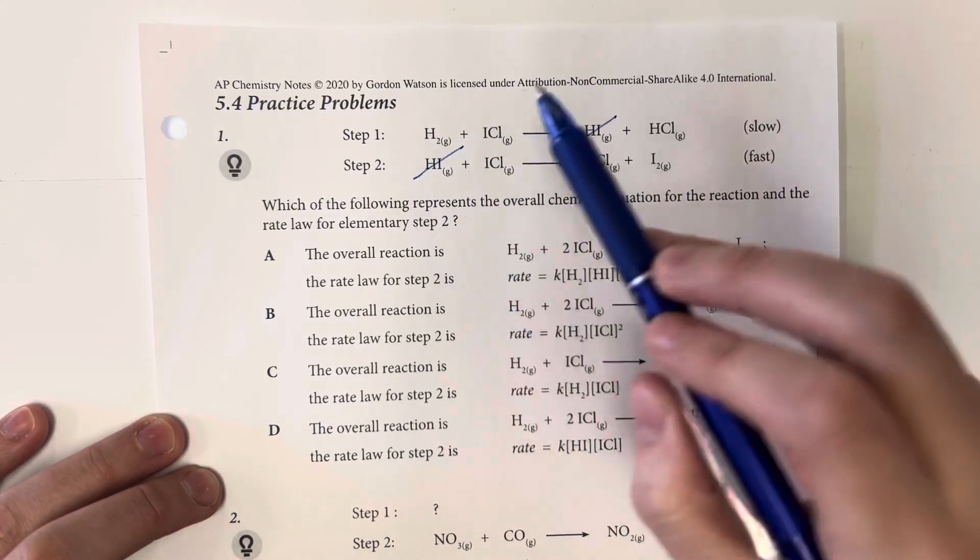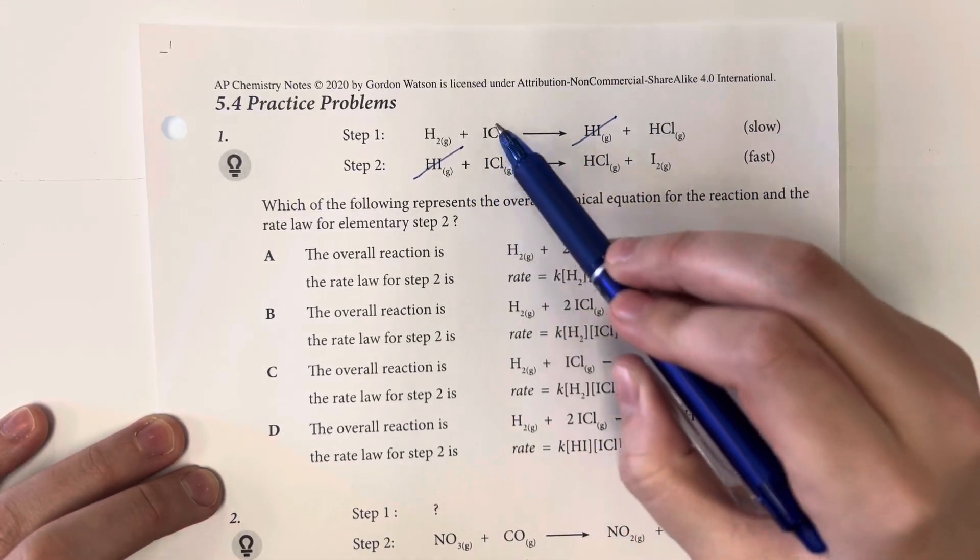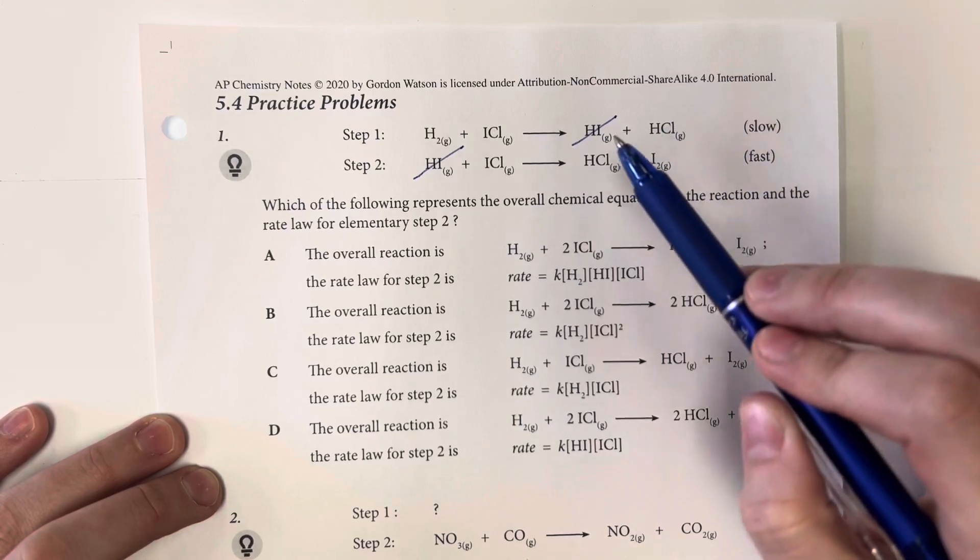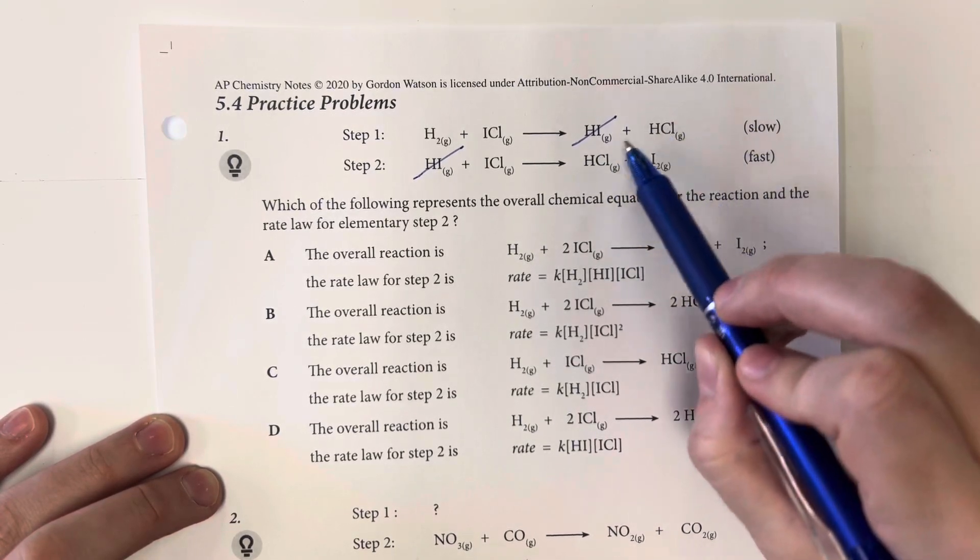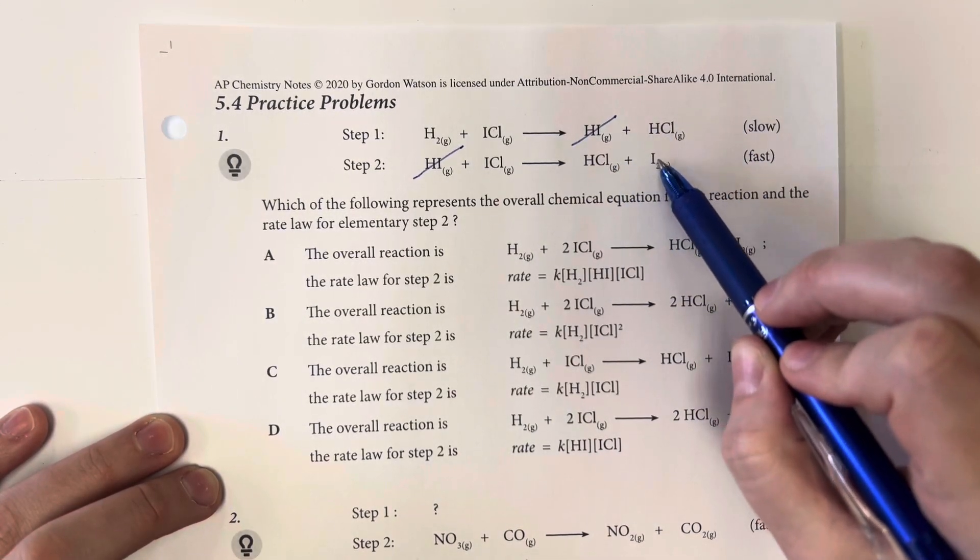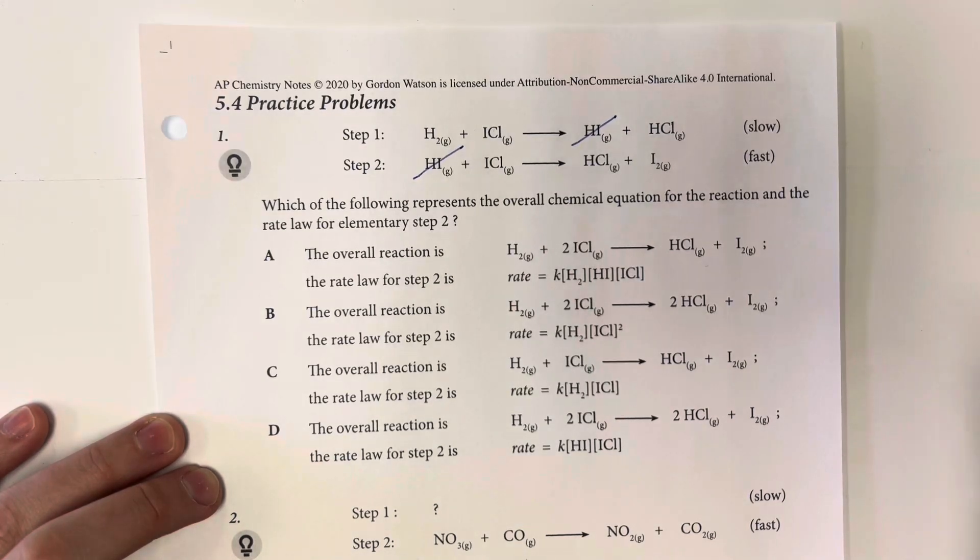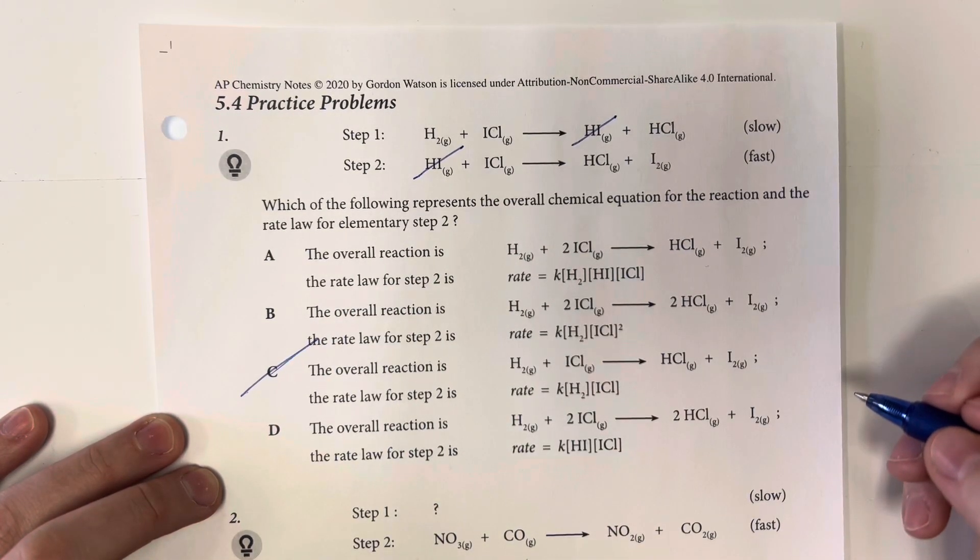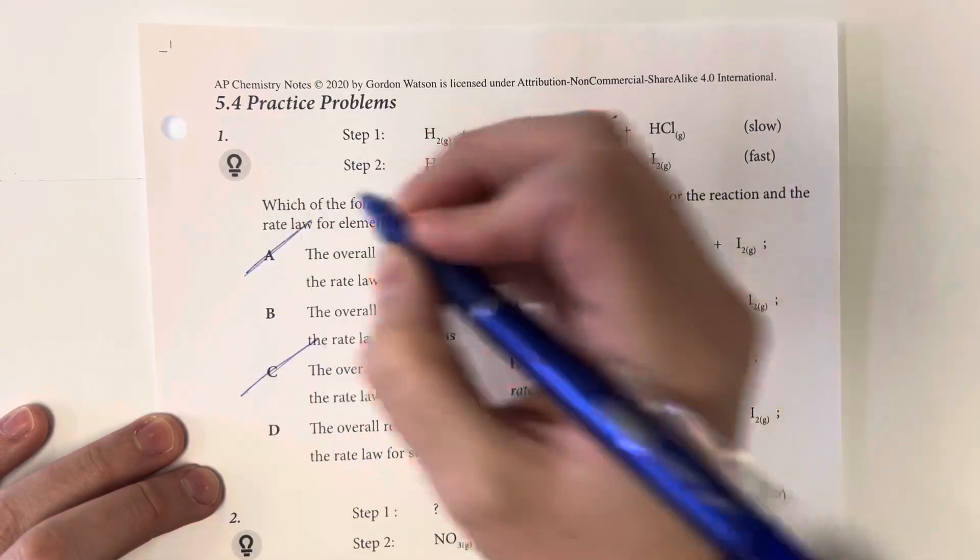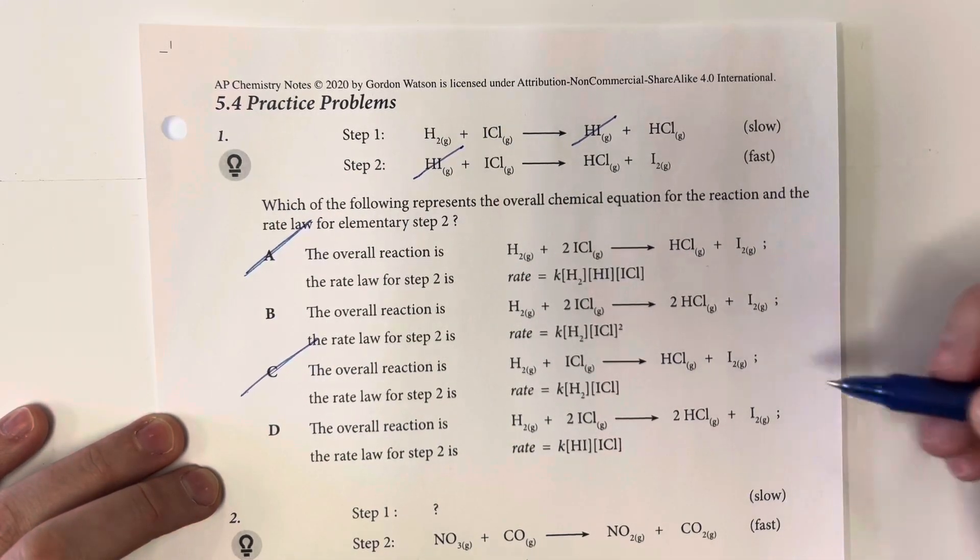And so I would be left with one H2, two ICls, two HCls, and then one I2. So I'm going to get rid of anything that does not match that. So that gets rid of option choices A and C.